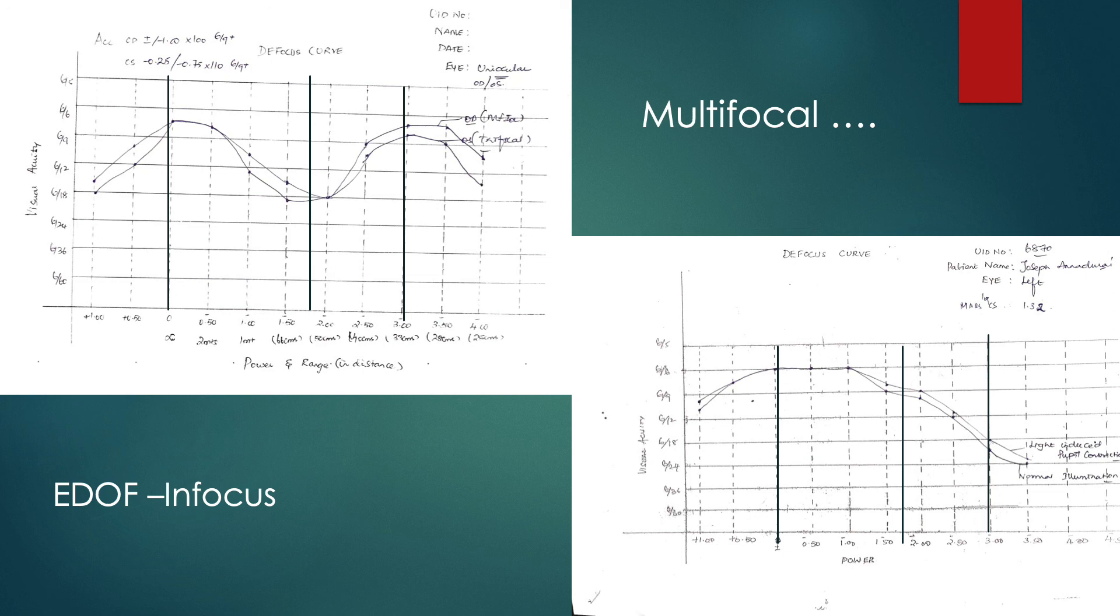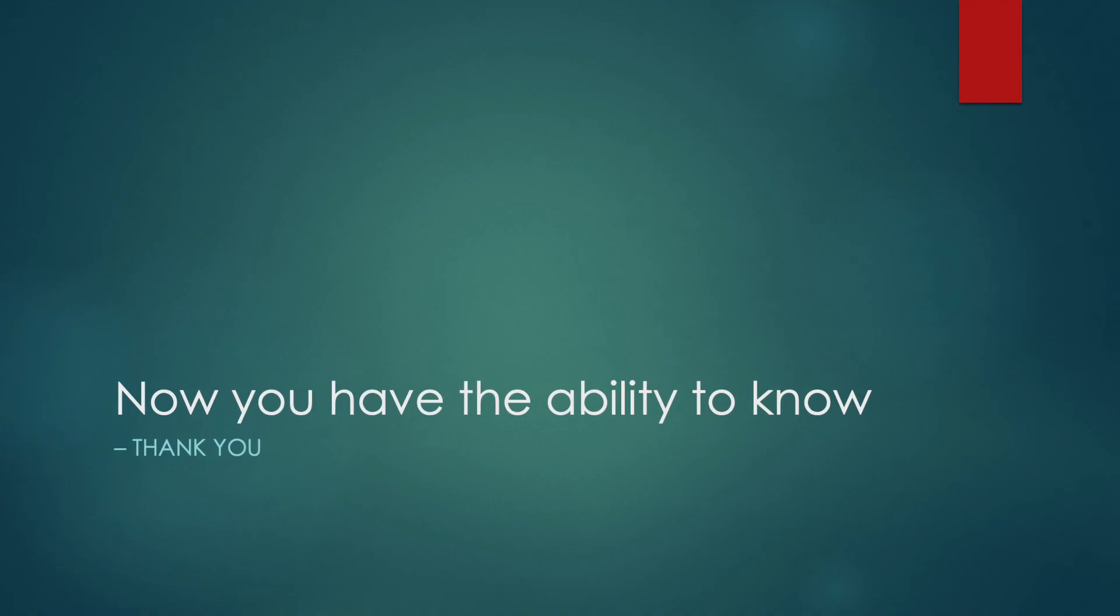The main carry home message is that for those of you who are implanting presbyopia correcting IOLs, it is not enough to just test the visual acuity for distance and near. For example, an unaided 6x6 N6 vision with multifocal IOL implant may actually result in an unhappy patient who has a compromised intermediate range of vision. While an uncorrected 6x6 for distance and N10 vision for near in one who has received an extended depth of focus lens with good intermediate vision and a fair amount of near vision may actually lead to a happy satisfied patient. If the best way of knowing something is to find out for yourself, I suggest that you start plotting the defocus curves so that you can understand how well your patients are really seeing. Thank you for your attention.